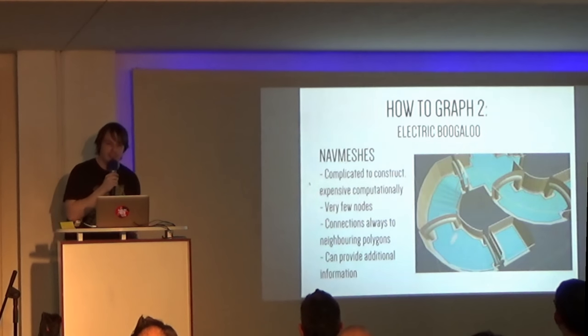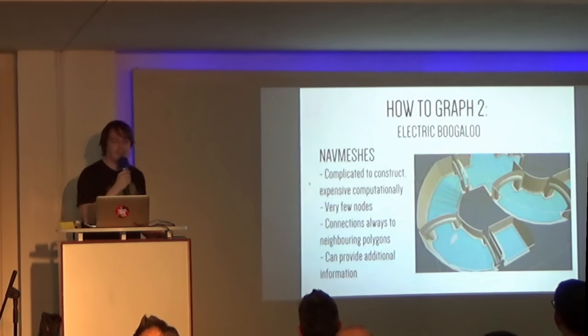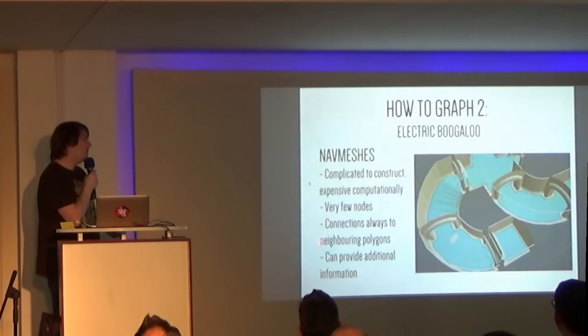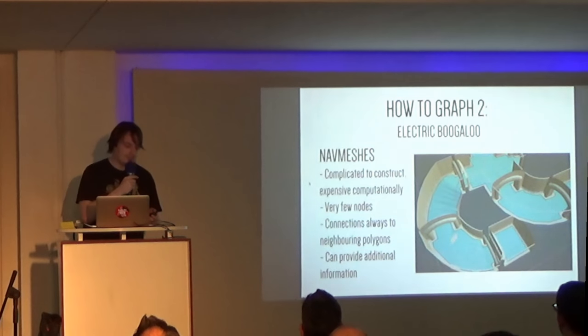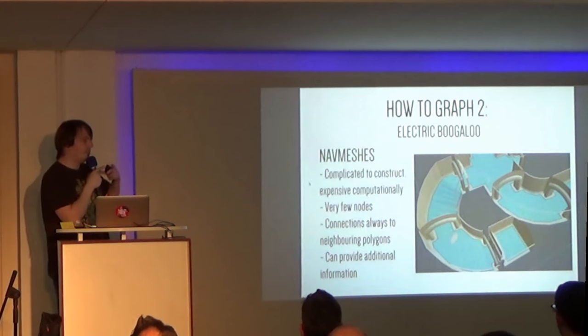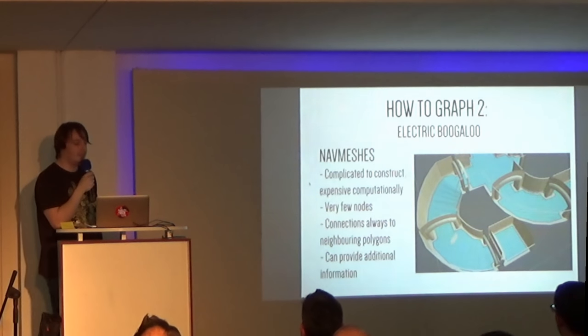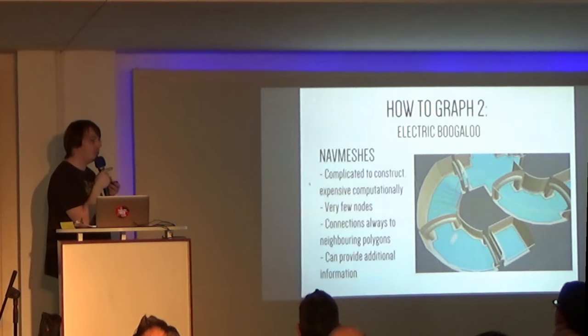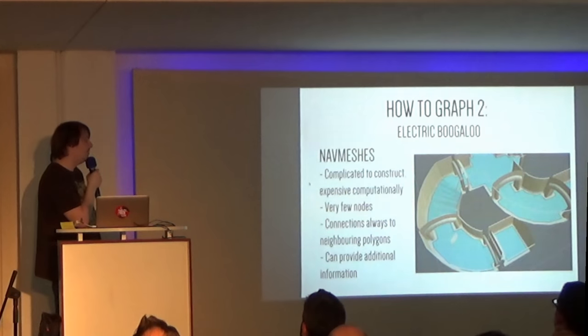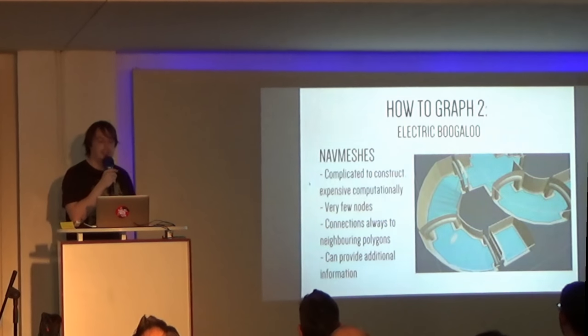And then, the last option is nav meshes, which are kind of the industry standard, as far as I know. And, they're pretty complicated to build if you want to do them superbly right. And, they have some benefits. There are very few nodes. Because nodes in this case aren't just dots somewhere, they are actually geometry that describes where you can walk. And as soon as you find that patch of geometry where you can walk, you can walk freely inside that. So, that saves a lot of space. Figuring out connections is also relatively easy. Because, you always just connect to your neighbors immediately. There are no huge gaps between things. And, it can give you additional information. Like, how much space you have in which direction. You can have enemies that stay a certain distance away from walls. So, you can get some benefit for your game design or for your AI behavior from that.